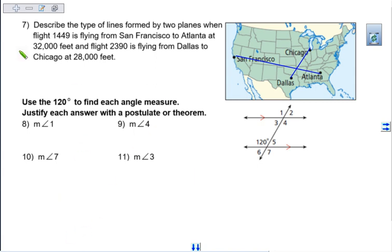Because most of you forgot that they are flying at different heights. Because one plane, this one is flying at 32,000 feet, and the other one is flying at 28,000 feet. So they don't actually meet in the air and have a plane crash. These are skew lines.